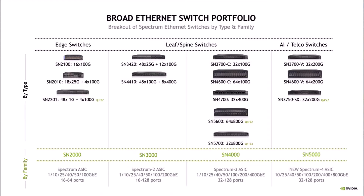These are the switches themselves with the speeds and feeds that each one of them does. The SN2000 series is based off the original Spectrum ASIC, from 16 to 64 ports, 1 to 100 gig. The two notable ones in the upper left-hand corner are the SN2100 and the SN2010. Those are half-width 1U switches, so you can get two of those switches in 1U in a network rack. They make a rack mount for those switches that allows you to have a fully redundant switching top-of-rack platform.